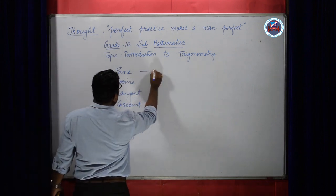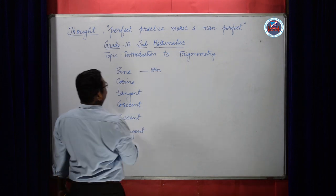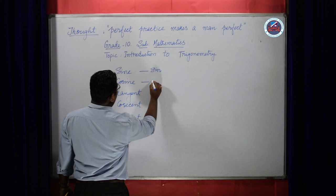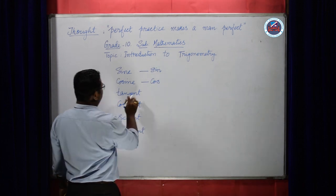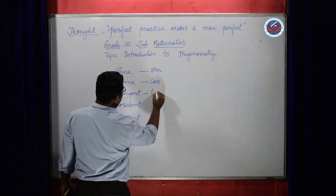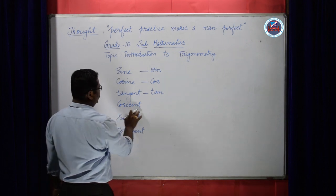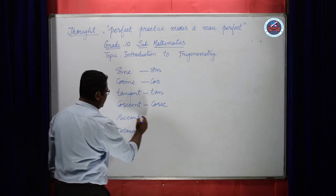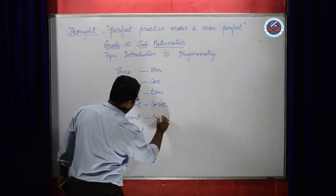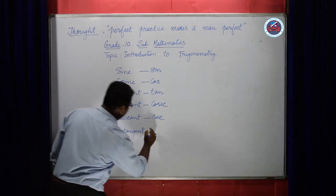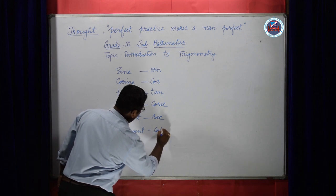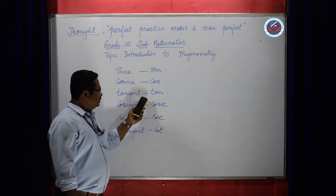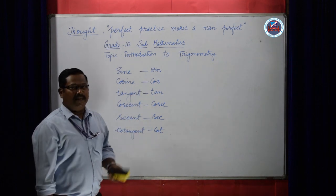Sine is abbreviated as SIN, but you still pronounce it as sine. Cosine is abbreviated as cos, tangent is abbreviated as tan, cosecant is abbreviated as cosec, secant is abbreviated as sec, and cotangent is abbreviated as cot. But if you just write sine, cos, etc., we cannot define them.